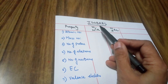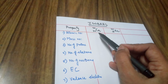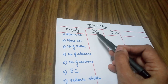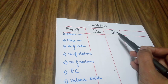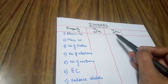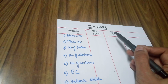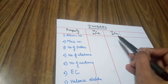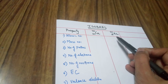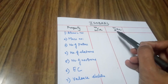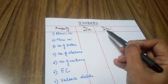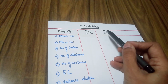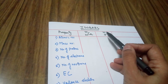An example of isobars is calcium: atomic number 20, mass number 40; and argon: atomic number 18, mass number 40. As you can see, these two are different elements — one is calcium, the other is argon; they don't belong to the same element. What's common? The mass number, which is 40.